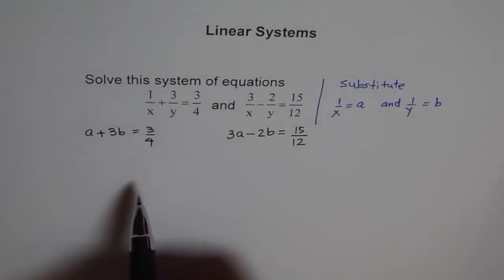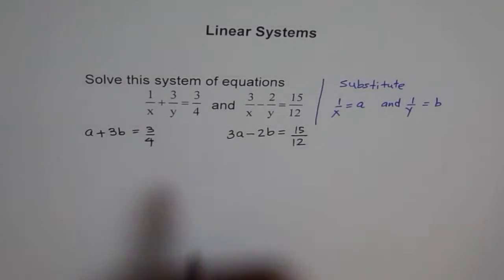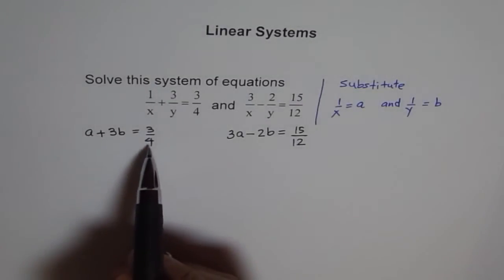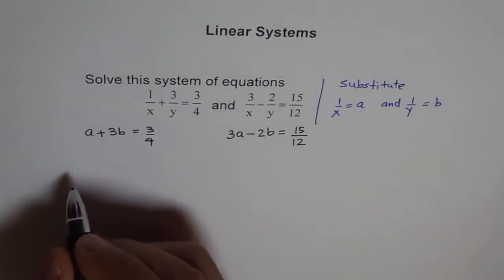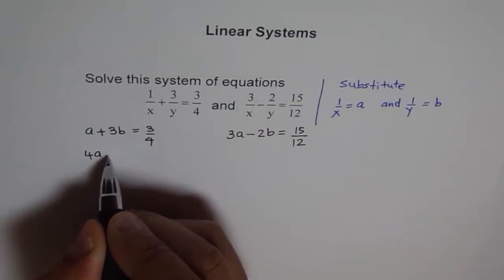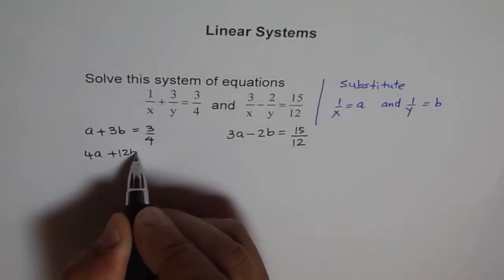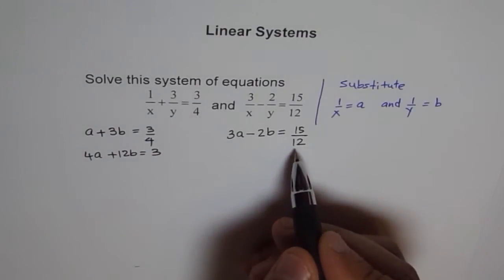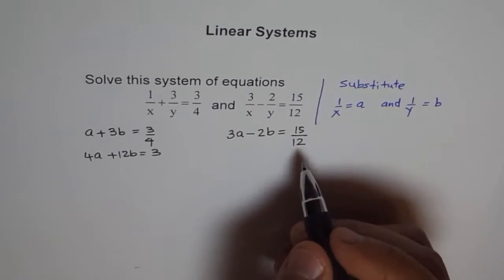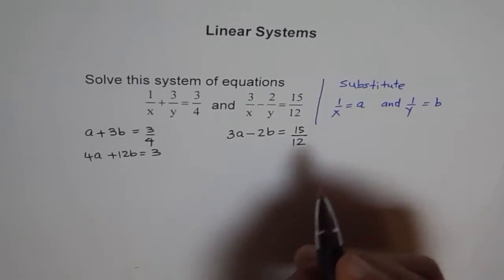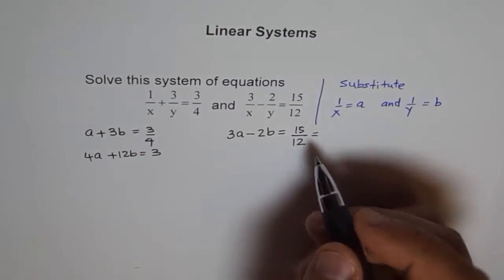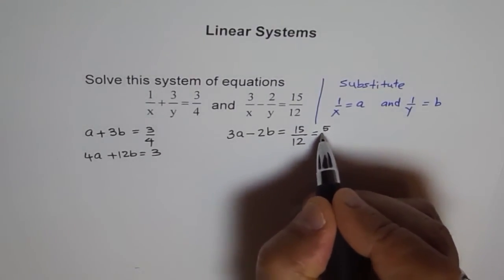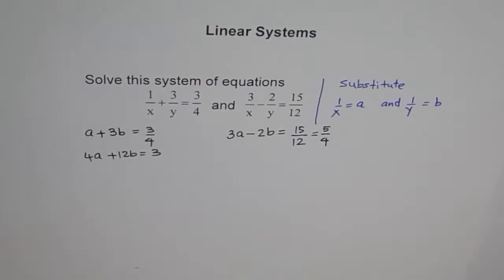Another strategy is get rid of fractions. Here we have 4 in the denominator, so I'm going to multiply by 4 everything. So once I do that, I have 4A plus 12B equals 3 here. And here I'm going to multiply everything by 12. But before that, actually I can simplify this.